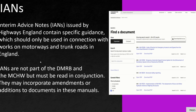The second reference is Interim Advice Notes, or IANs. These are not standards — they are simply additions to the DMRB and MCHW and must be read in conjunction with those documents. They may incorporate amendments or additions, but they are not full standalone documents.